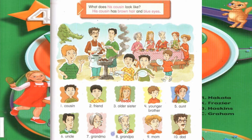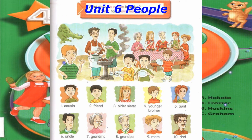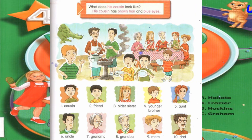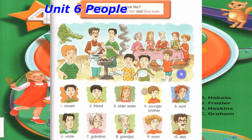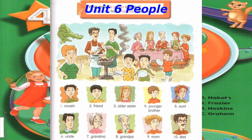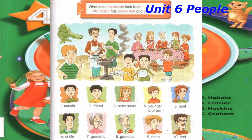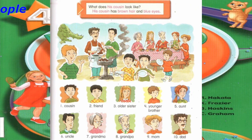Number 8: What does his grandpa look like? His grandpa has gray hair, a gray mustache, a beard, and brown eyes. Number 9: What does his mom look like? His mom has short blonde hair, a beard, and gray eyes.